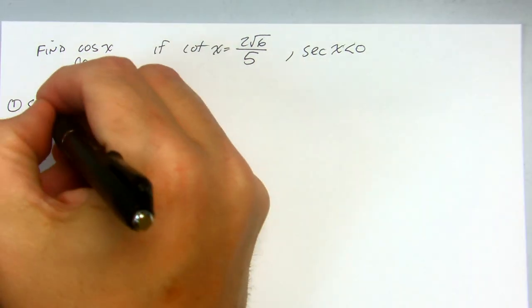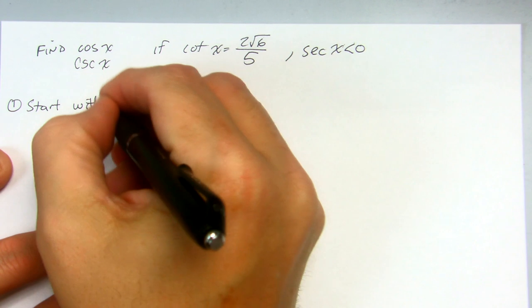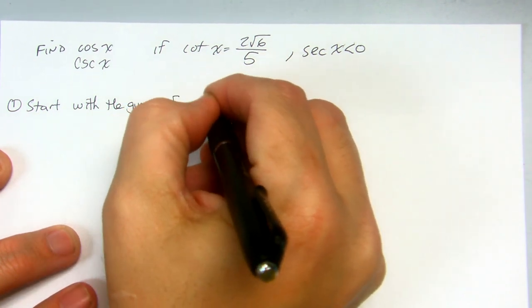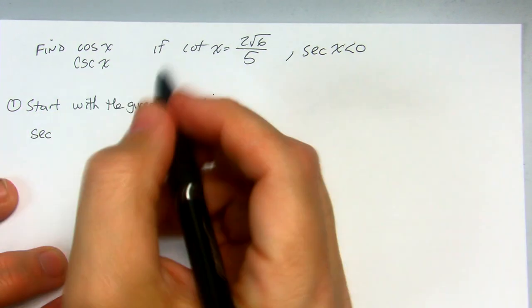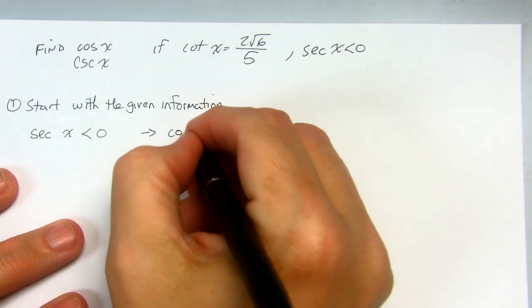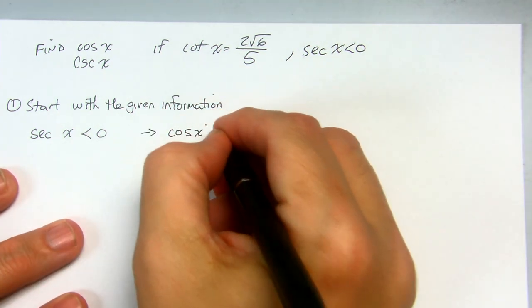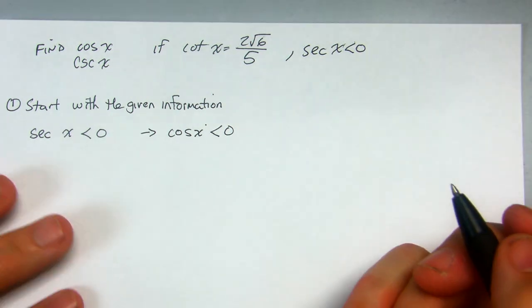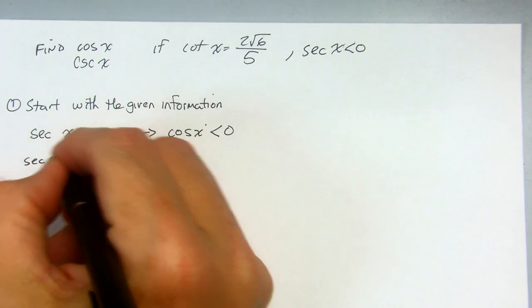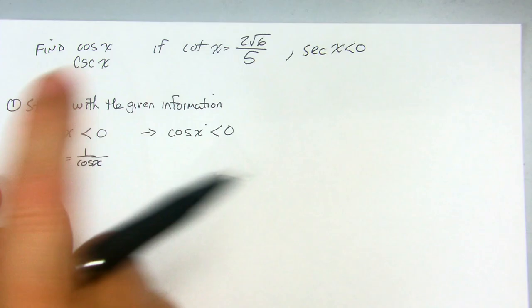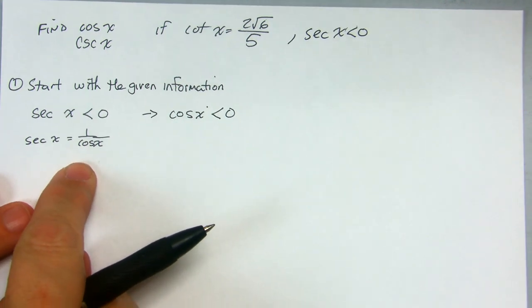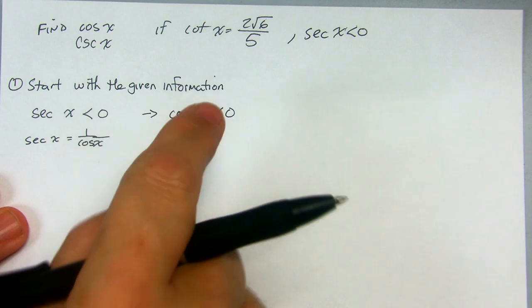So the first thing — start with the given information. Secant x being less than 0 tells me that the cosine of x has to be less than 0 as well. So the cosine is negative and the secant is negative. Because secant of x equals 1 over cosine x, so whatever the sign of secant is, the cosine has to be the same sign. So I know cosine is negative.